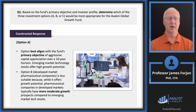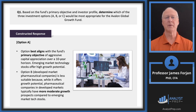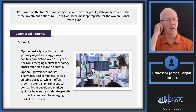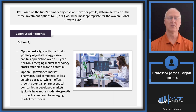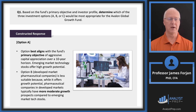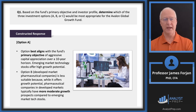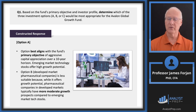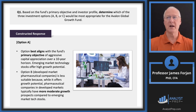Option A best aligns with the fund's primary objective: aggressive capital appreciation over a 10-year horizon. So emerging market tech stocks offer high growth potential. This is the core of the portfolio. Options B and C are probably less appropriate — option B does offer growth potential, but it's in the developed market, so there's more moderate growth; you'd likely find higher growth in emerging markets.